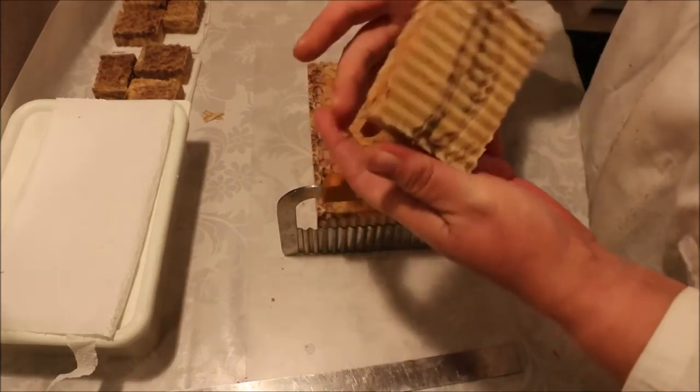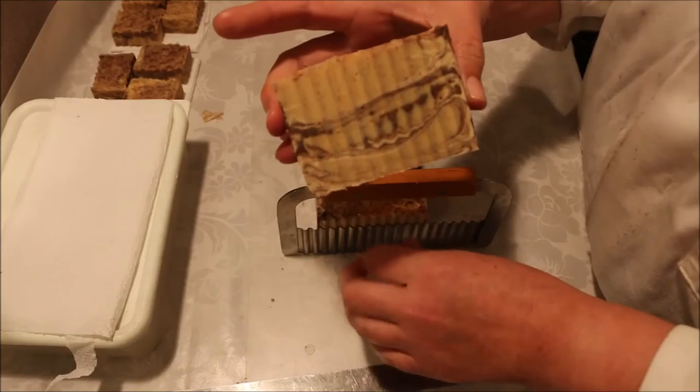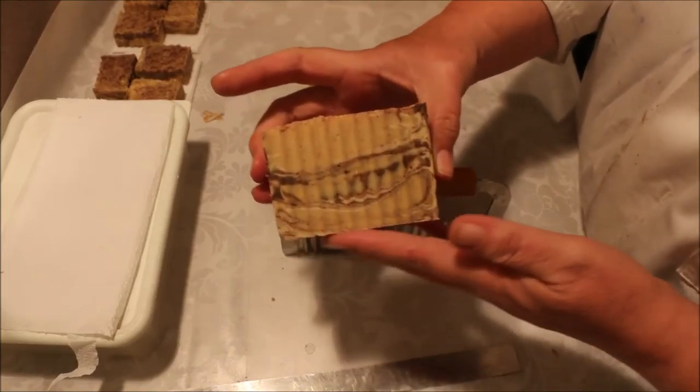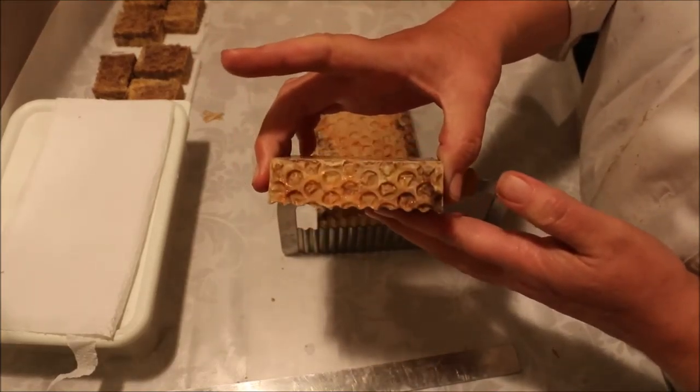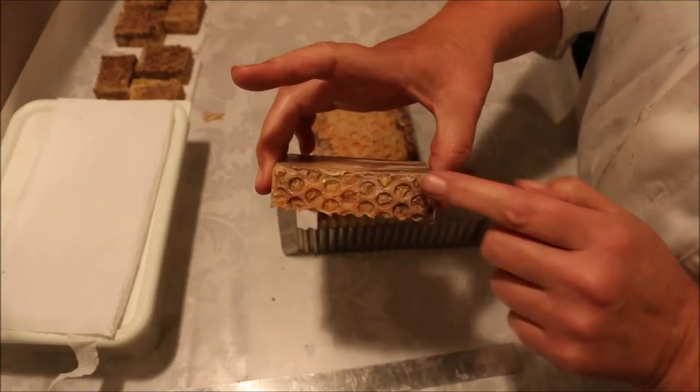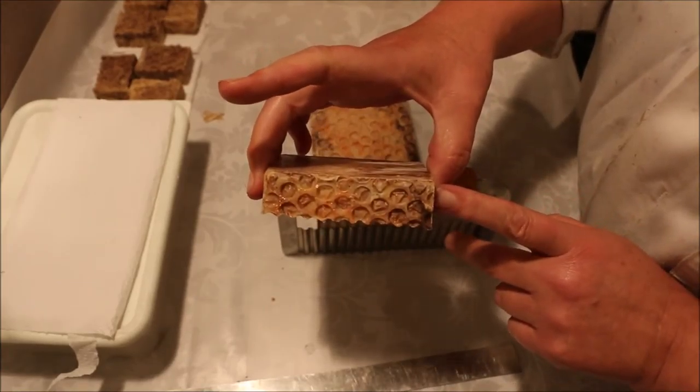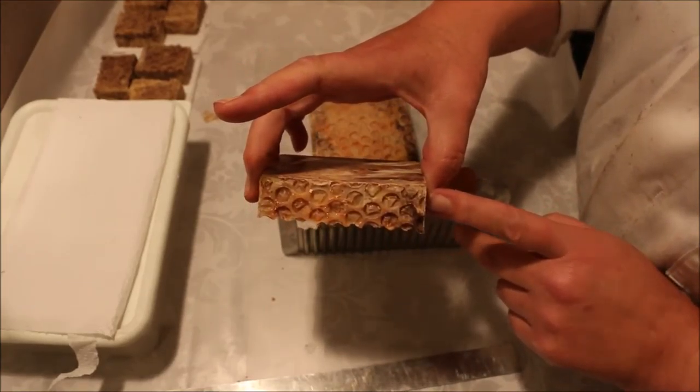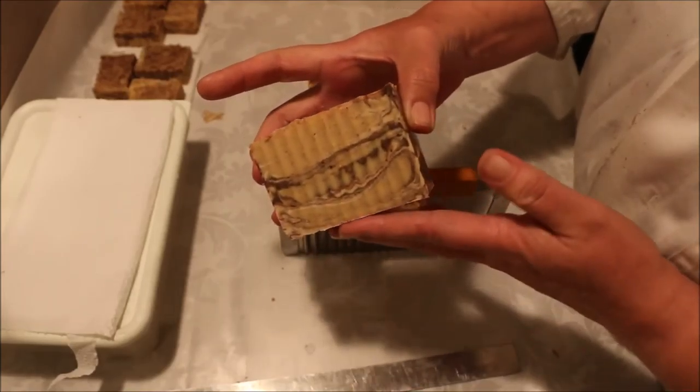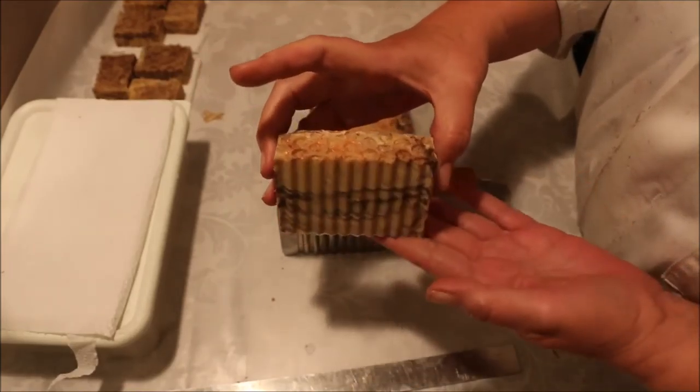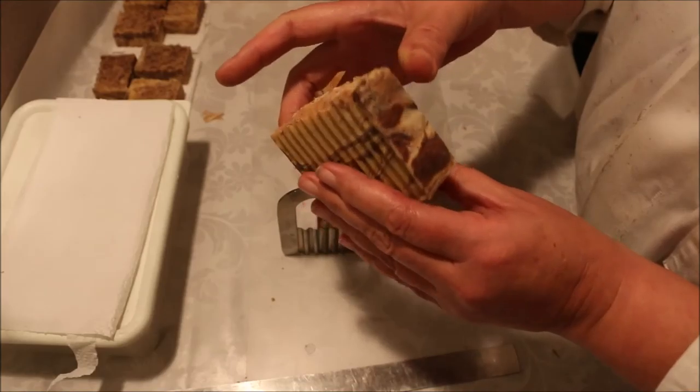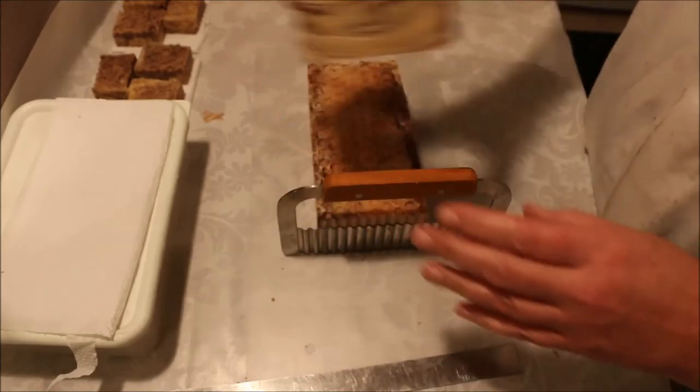There we go. There's the first cut. So we've got the bubble wrap indentation on the top to simulate honeycomb and the crinkle top cut on the side.